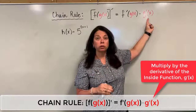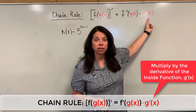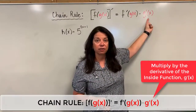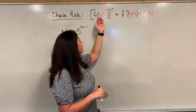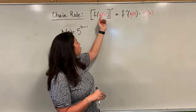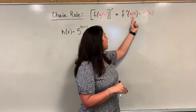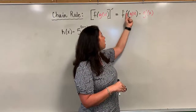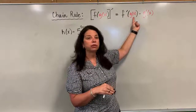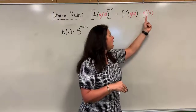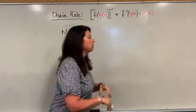We are going to multiply by the derivative of that inside function — that's how we take care of that piece. So again, we have a composition of functions and we're finding its derivative. We need to take the derivative of the outside function, keeping the inside function the same, and then multiply by the derivative of that inside function.